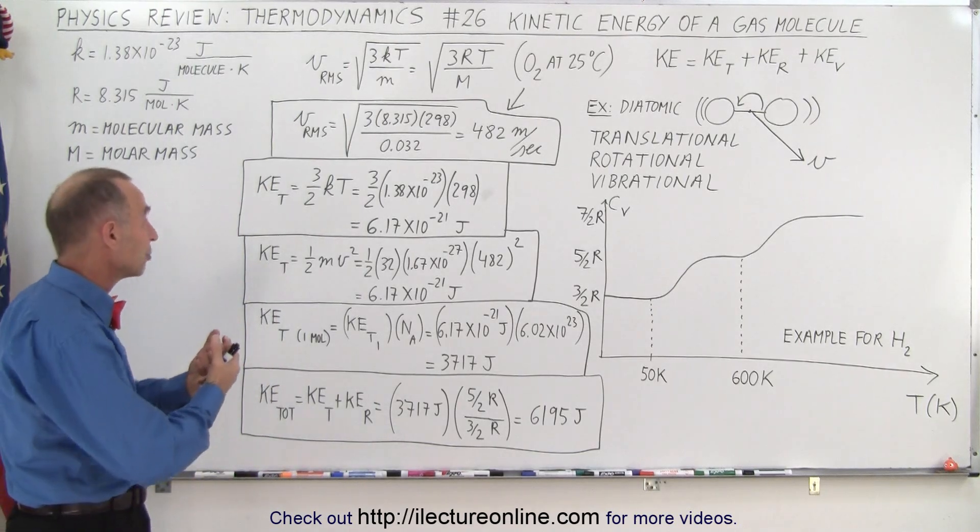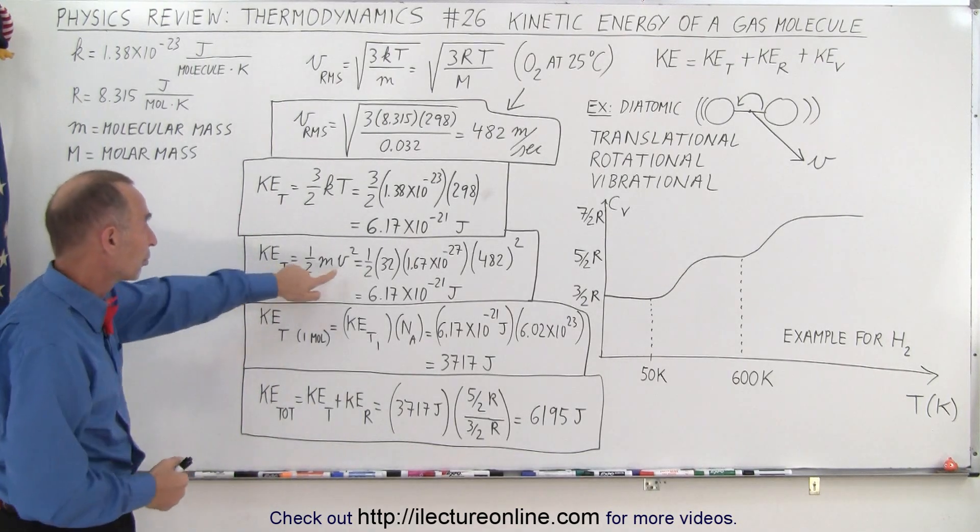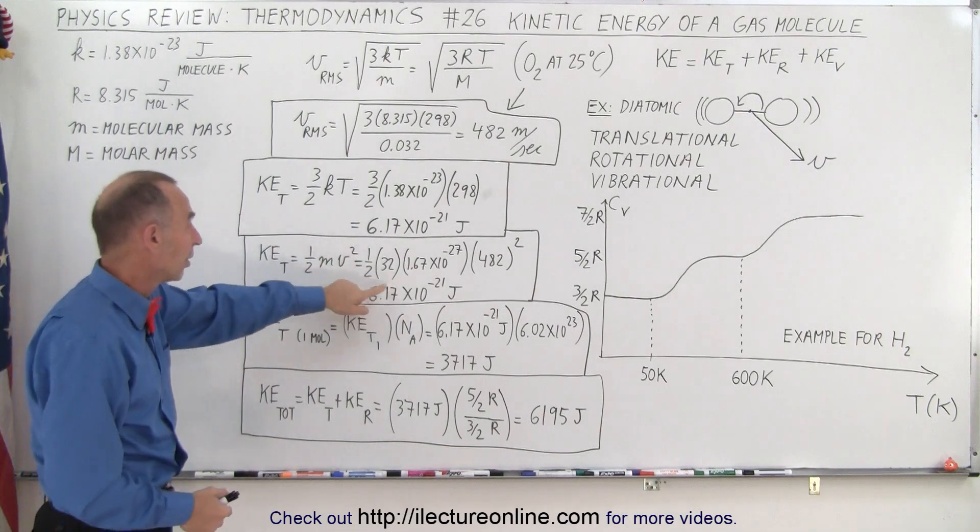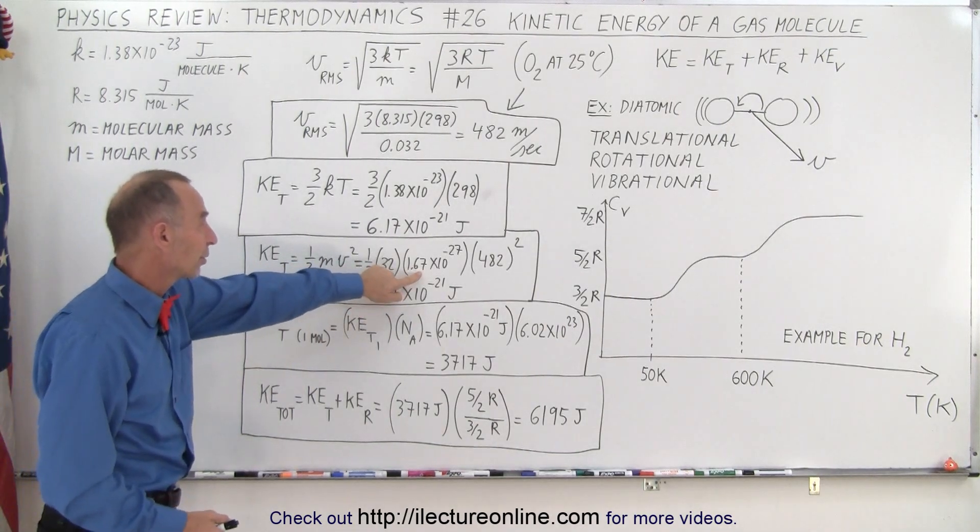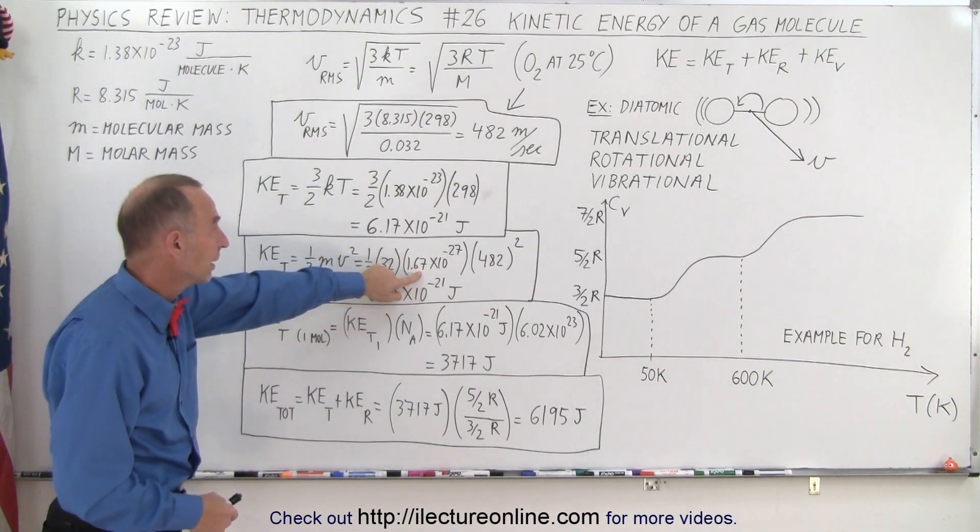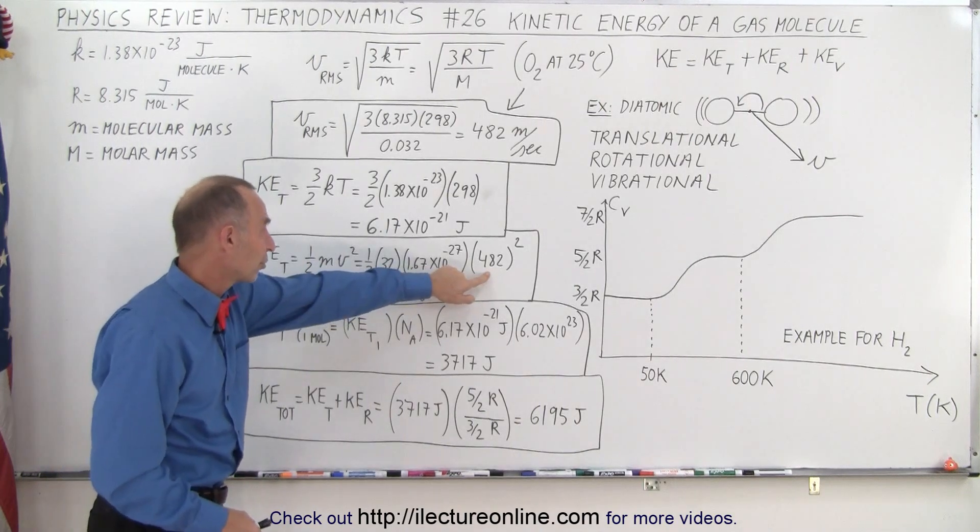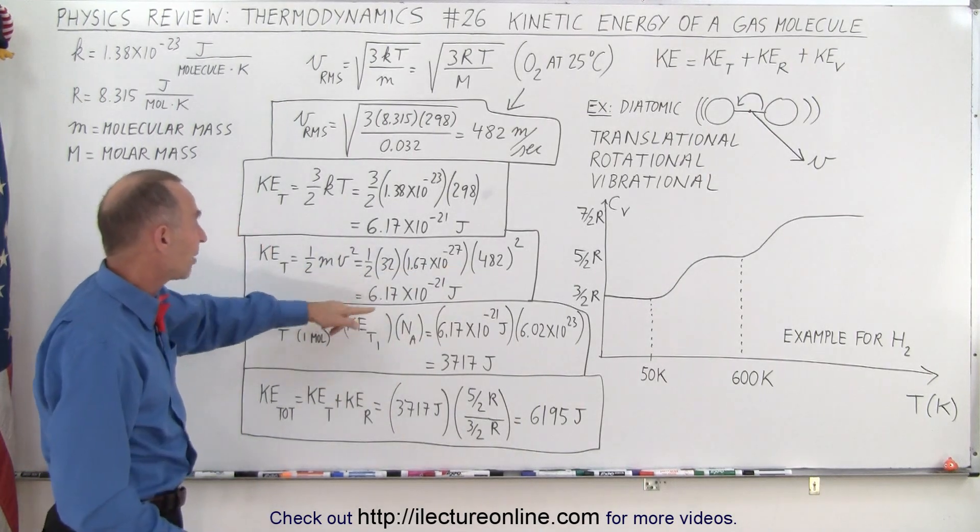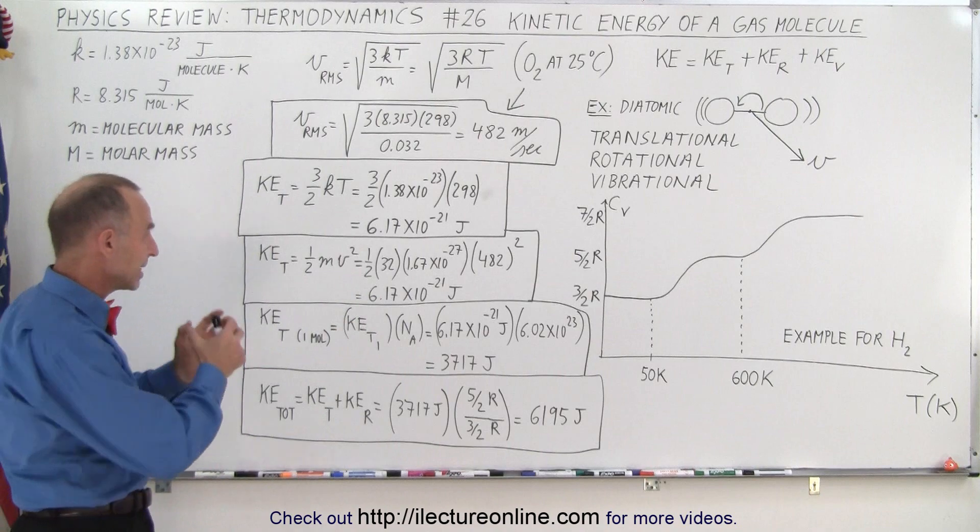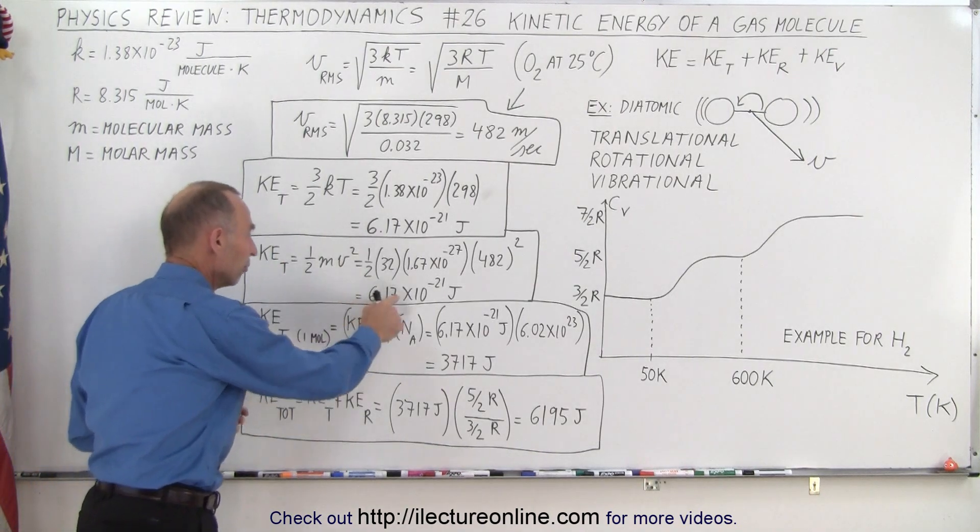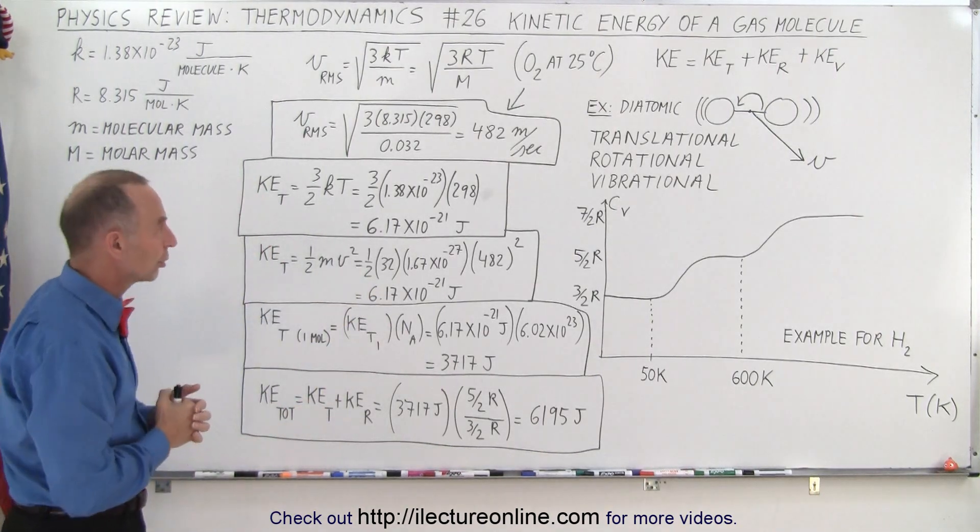Now if we want to calculate the translational kinetic energy in terms of the velocity we would do it like this: 32 times the mass of a single nucleon, and then multiply times the velocity squared times one half and voila. There we have the kinetic energy due to translational motion for a single gas molecule.